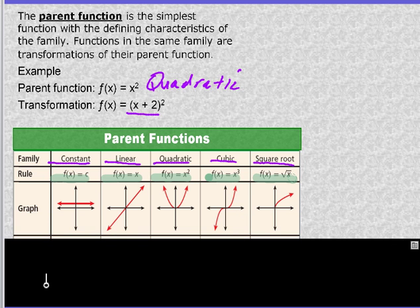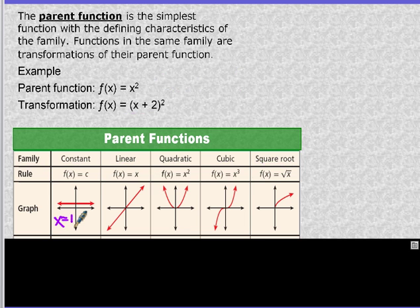These are what the parent graphs look like. They have just drawn one for the constant, but c is going to be some number. This one looks like it might be f of x equals 1, where 1 is your constant. The value of f of x or y never changes. Linear function is your direct variation function that passes through the origin, so the y intercept is 0, slope is 1. Quadratic is our parabola. Cubic is, I like to call this a squiggle. Square root looks like a sideways half parabola.